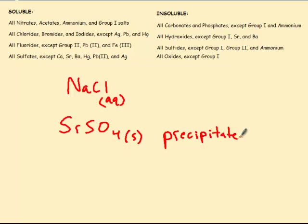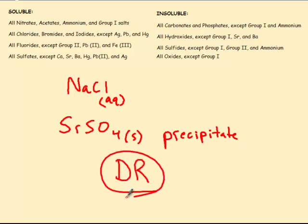That solid is called a precipitate. It's called a precipitation reaction, and it occurs in the double replacement reactions we've been working on.